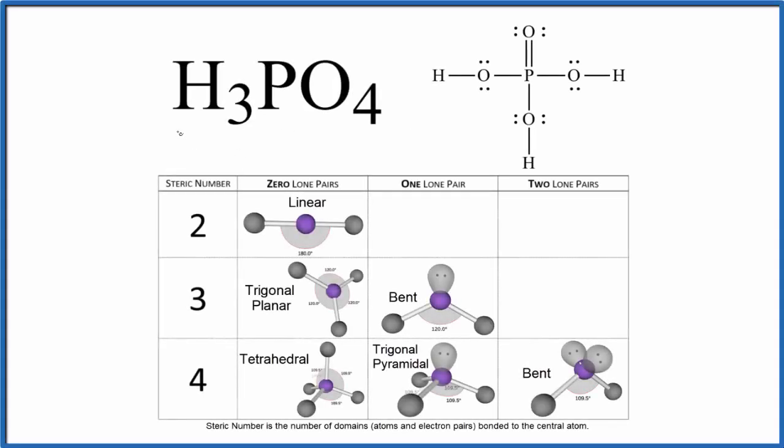Let's take a look at the molecular geometry for H3PO4. This is phosphoric acid. When we look at molecular geometry, we need to start with a valid Lewis structure. So this is our Lewis structure for H3PO4.